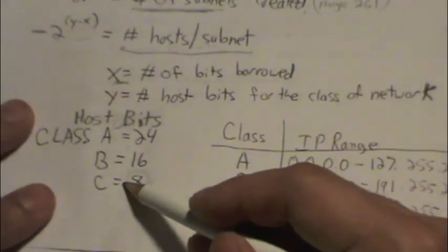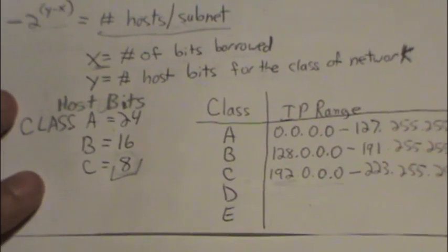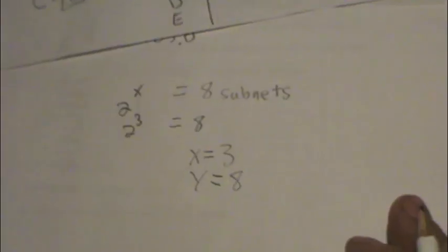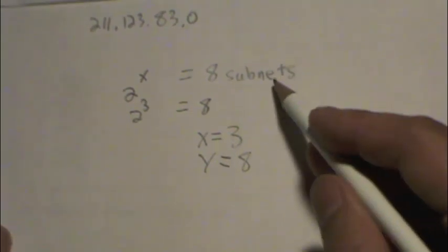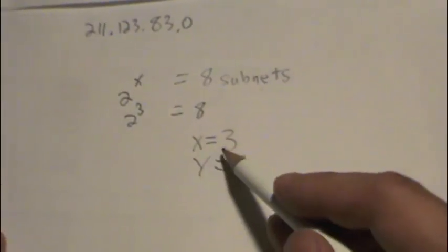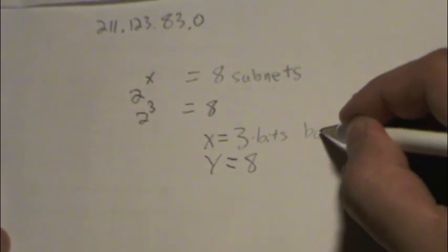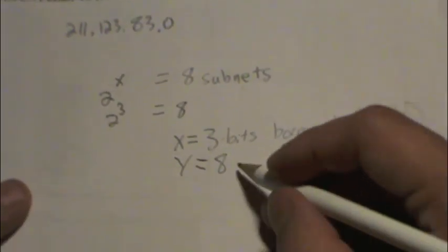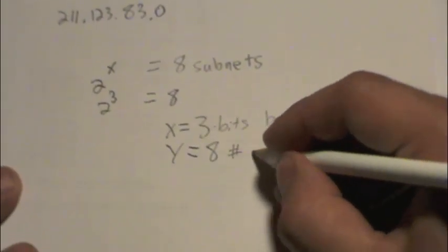Class C, the number of host bits is 8, so it looks like y is 8. y equals 8. I believe that's all we need to start cranking out our numbers. So we know we have eight subnets already. That was given to us by the question. We have the number of bits borrowed.